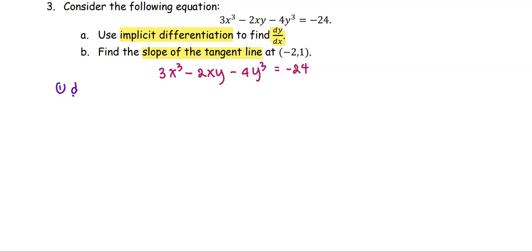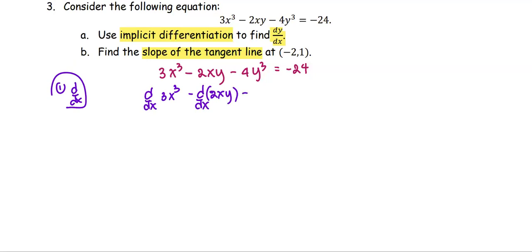Step number 1: we apply d/dx to each term. So d/dx of 3x³ minus d/dx of 2xy minus d/dx of 4y³ equals d/dx of negative 24.